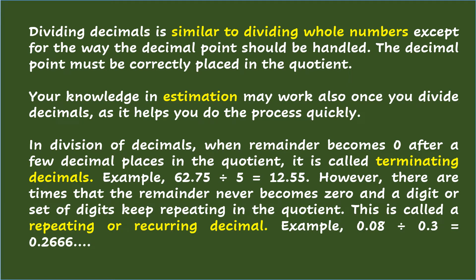In division of decimals, when the remainder becomes zero after a few decimal places in the quotient, it is called a terminating decimal. Example: 62.75 divided by 5 equals 12.55. However, there are times that the remainder never becomes zero and a digit or set of digits keeps repeating in the quotient. This is called a repeating or recurring decimal. Example: 0.08 divided by 0.3 equals 2.666 and so on.